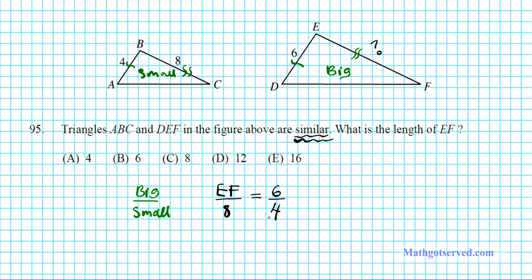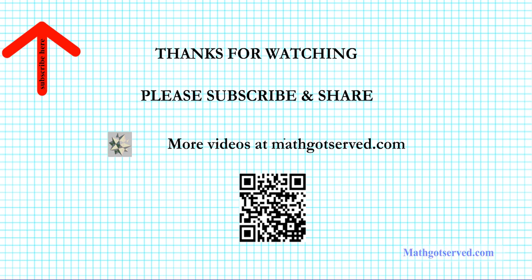The length of side EF is 12 units. Thanks so much for taking the time to watch this presentation. Please subscribe to our channel for updates to the remainder of this review series, and post a comment if you have any questions, clarifications, or suggestions to help us improve our videos. More clips can be found at mathgotserved.com. Thanks again for watching and have a wonderful day.